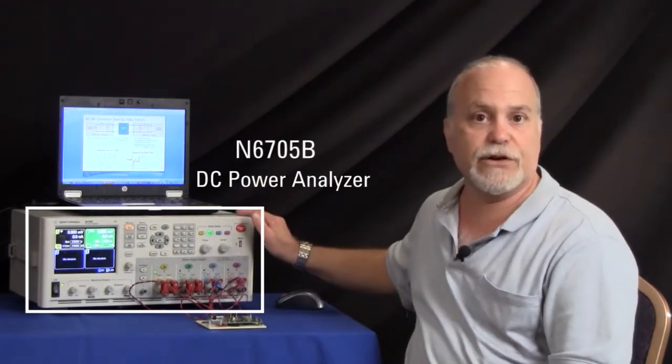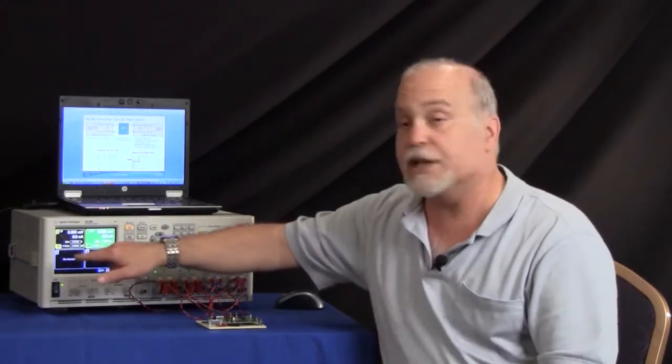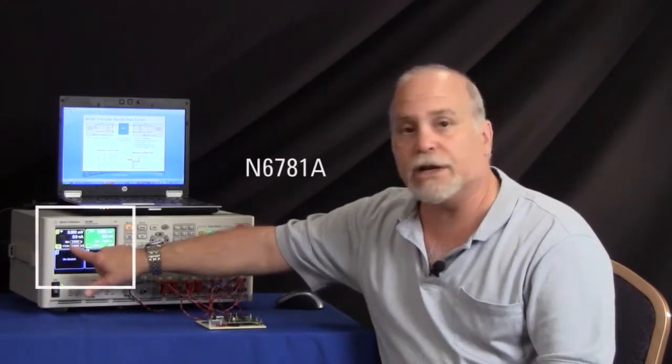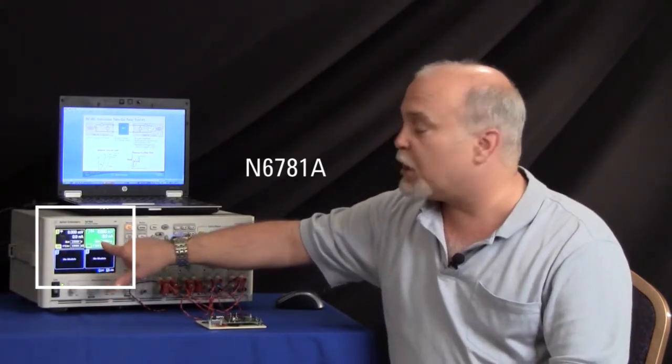So this is the N6705B DC power analyzer. We have it configured with two modules, it's a modular system. Module one is an SMU module, the N6781 SMU, and module two is also an N6781 SMU.